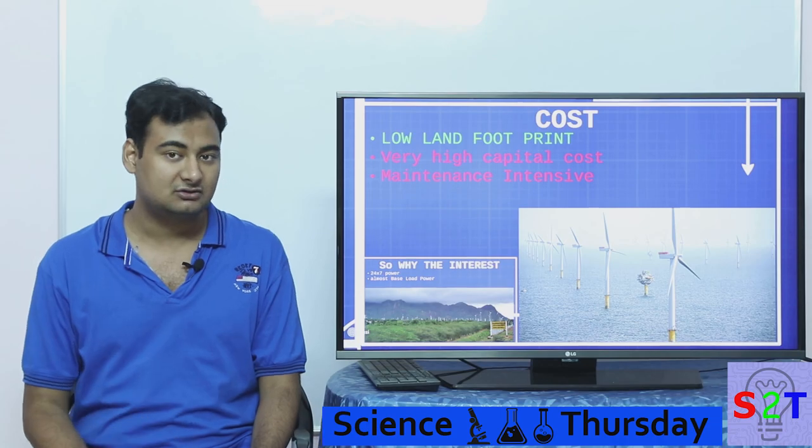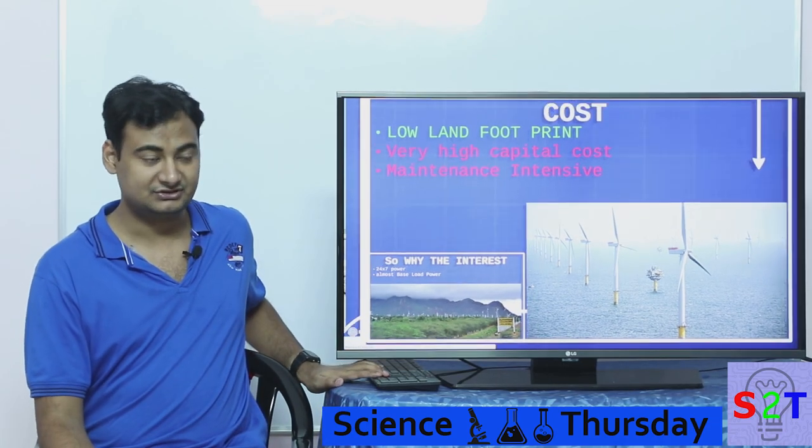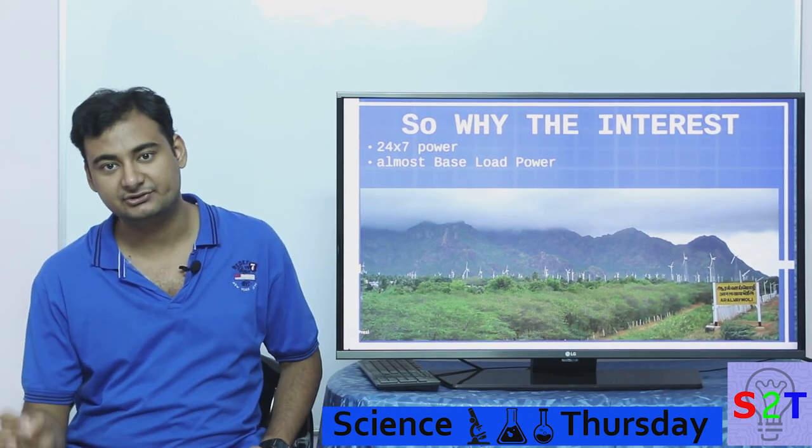Even though it has very low land capacity and the raw amount of energy it gives is very high, the capital cost is very high. But if cost is so bad, then why is there so much interest? Well, it has the option to provide power 24/7.